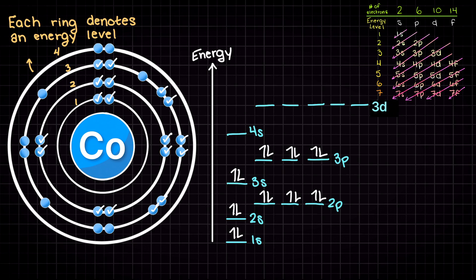Next is our 4s orbital, which can take 2 electrons. Now we have our first d orbital, which can actually hold 10 electrons, and we have 7 electrons left to place. Recall that we place 1 electron in its own orbital before pairing them up. Therefore we will get an electron configuration that looks like this.